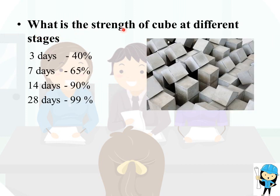What is the strength of a concrete cube at different stages? At 3 days it is 40%, at 7 days it is 65%, at 14 days it is 90%, and at 28 days it is 99% of the target strength.